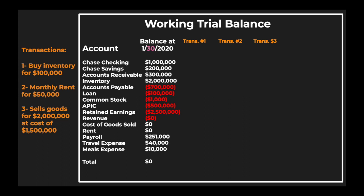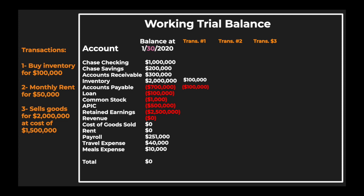Let's work through transaction number one: buying inventory for $100,000. You record a debit to inventory for $100,000 and a credit to accounts payable. The credit to accounts payable — not cash — means you are buying inventory on credit and will pay in the future.